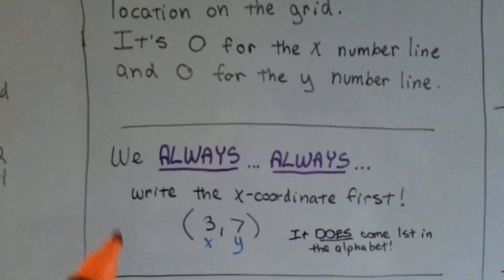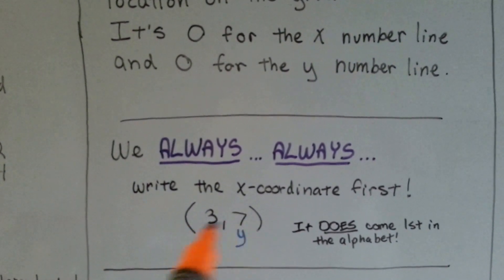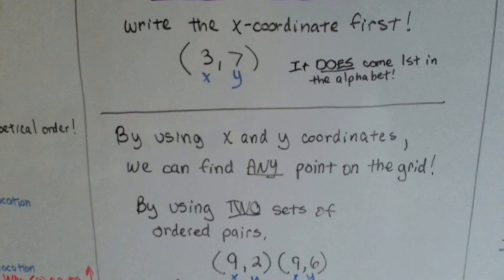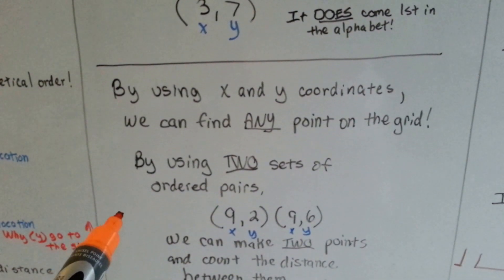We always write the x-coordinate first. And by using x and y coordinates, we can find any point on the grid.